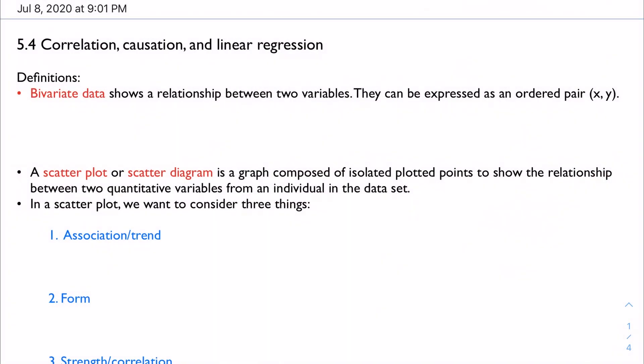So this last section of 5.4 is maybe one of the most important: correlation, causation, and linear regression. This is where you see a lot of statistics in the media, in research, and it could certainly be helpful for something like an IA.